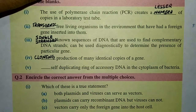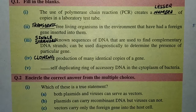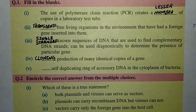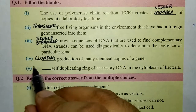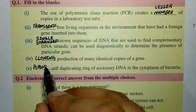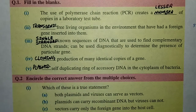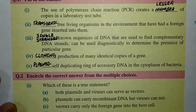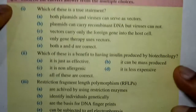The last filling the blank: 'Dash — self-duplicating ring of accessory DNA in the cytoplasm of bacteria.' The answer here is plasmid. A plasmid is a self-duplicating ring of accessory DNA found in the cytoplasm of bacteria.